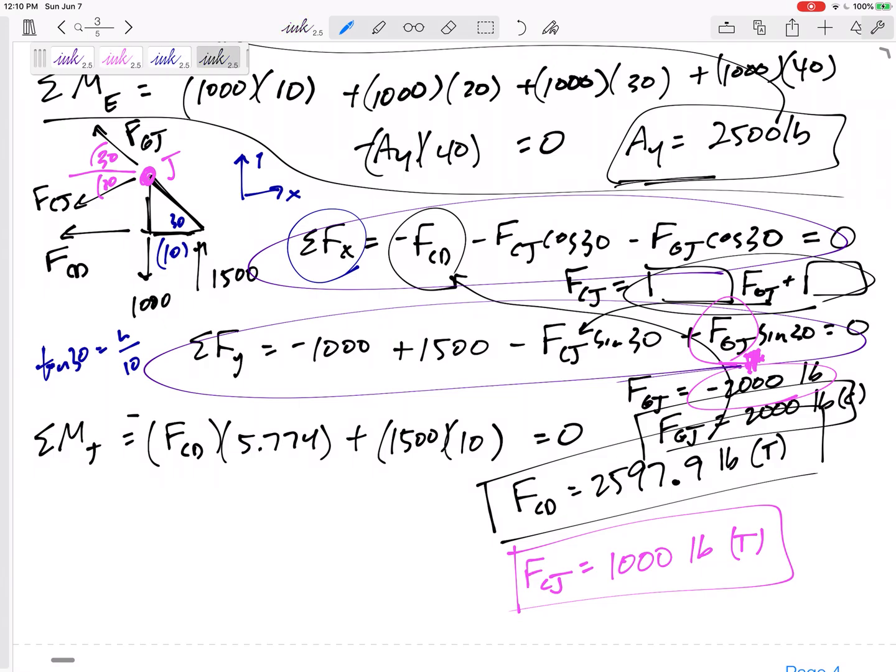One thing I want to mention, I don't want to confuse you too much, but I could have summed my moments about a different point besides point J. Point J was good. It's all for FCD, but maybe even better would have been solving about point C over here. Even though it's off my section, I could have summed my moments about point C. That way, only FGJ would be my only unknown, and then I could solve straight into my Y equation and solve for FCJ. It would have eliminated the problem with having two equations, two unknowns, which isn't a terrible problem. I think it's a problem that y'all can and should be able to solve.